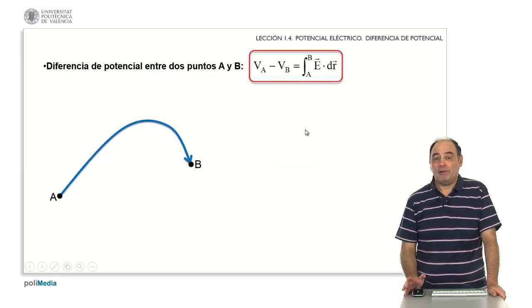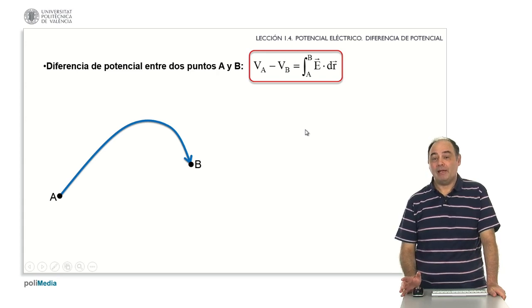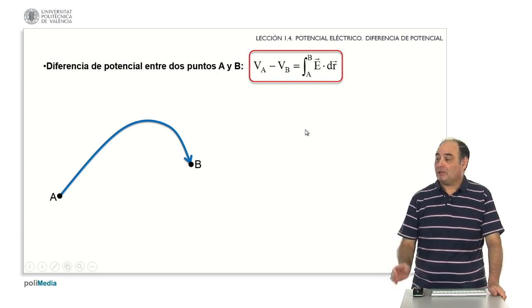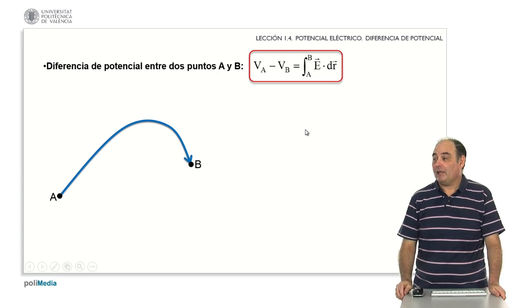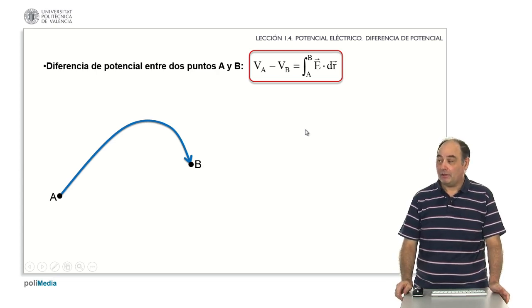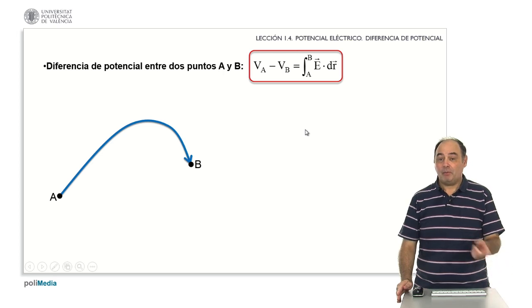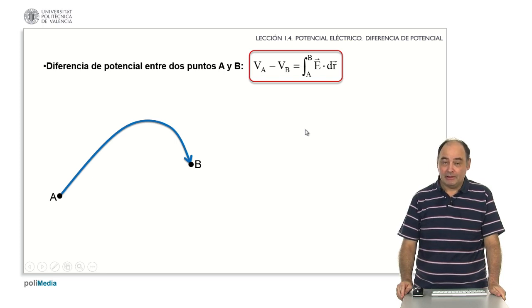The first of all is a definition: what is the potential difference between two points. We have here any two points A and B, and a path that goes from one to the other, the one that we have there marked in blue color. By definition, the potential difference between points A and B is precisely the integral along the path between A and B of the electric field.